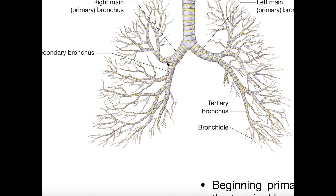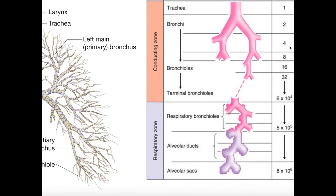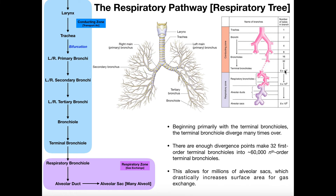The secondary bronchi divide further into what we call tertiary bronchi. Here's a secondary bronchus on the right side — it divides here and here into tertiary bronchi. On the left side, a secondary bronchus divides into tertiary bronchi as well. Overall, the number of tertiary bronchi increases to eight. While the exact numbers aren't critical, what's important is that the number of tubes approximately doubles with each division — double the tertiary bronchi versus secondary, double the secondary versus primary, and so on.